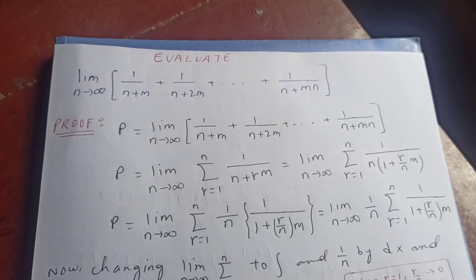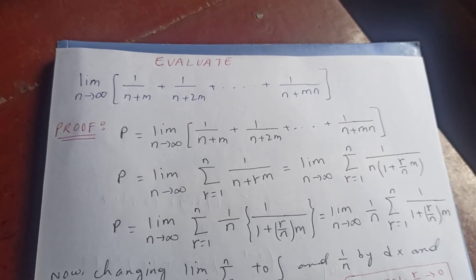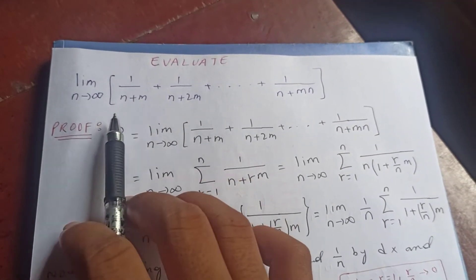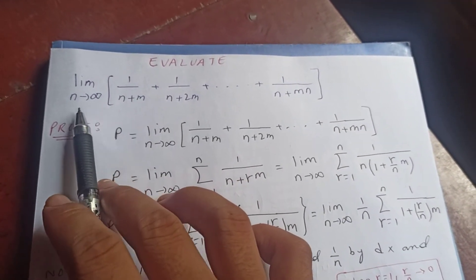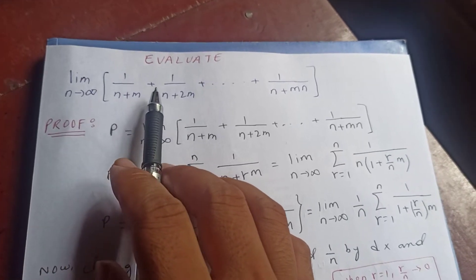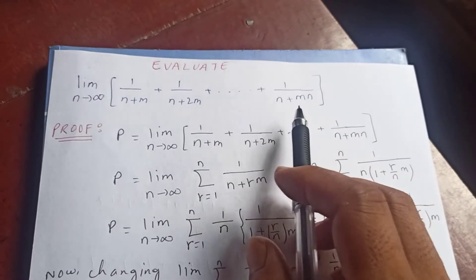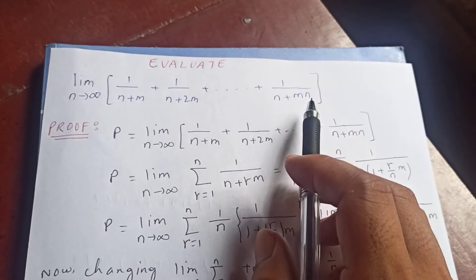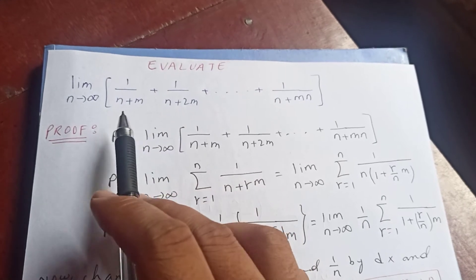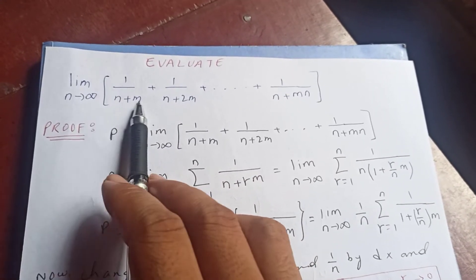Hi guys, thanks for watching my video. Today we are going to evaluate the limit: the limit as n tends to infinity of 1 over (n + m) plus 1 over (n + 2m) plus and so on.